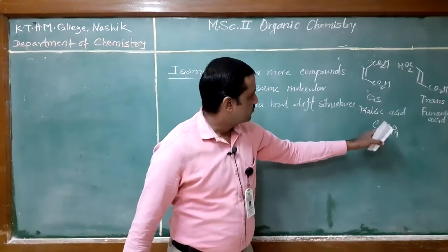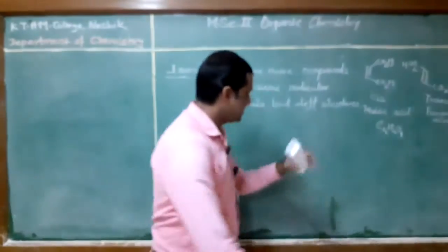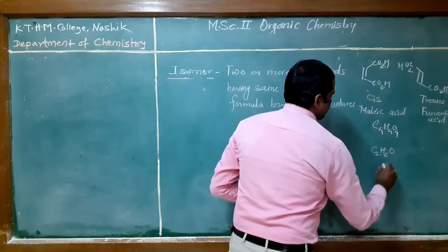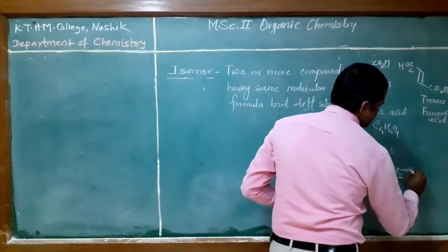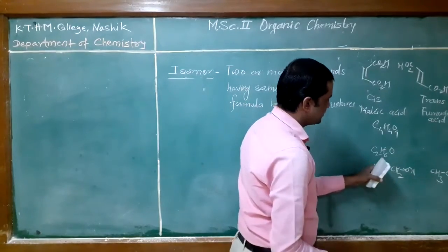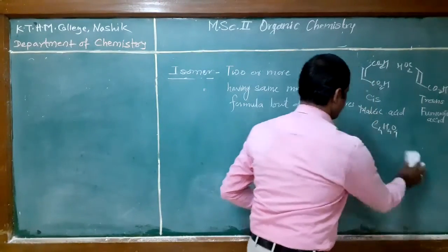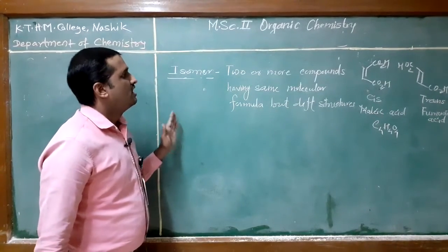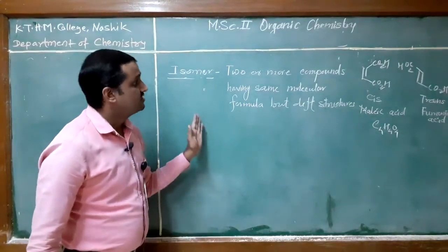For example, the molecular formula C4H4O4 has two compounds with different geometry — one is cis (maleic acid) and another is trans (fumaric acid). Similarly, C2H6O can have two structures: CH3CH2OH, which is ethyl alcohol, and CH3OCH3, which is dimethyl ether. The molecular formula is the same but the structures are different.